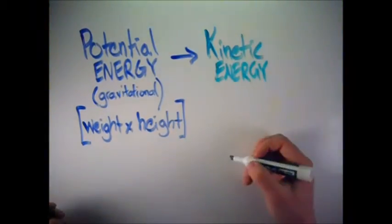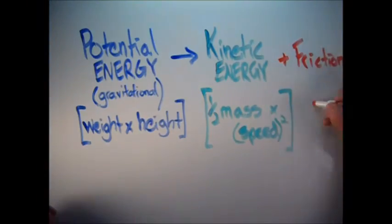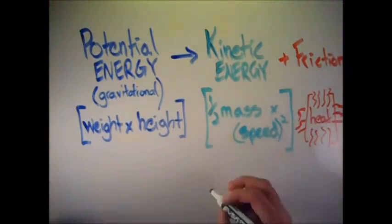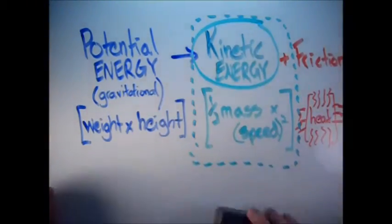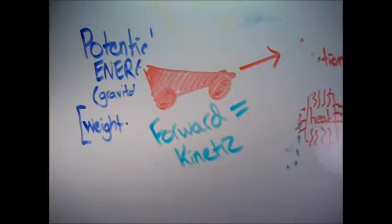That's going to turn into kinetic energy, which is half the mass times the speed squared, plus friction, which is just heat. We want to turn as much of this potential energy into kinetic energy because kinetic energy is ultimately what is going to win the race. It makes your car go forward.